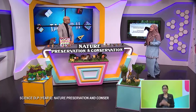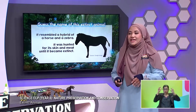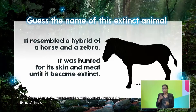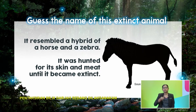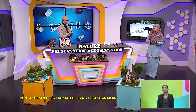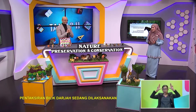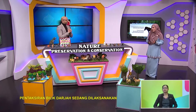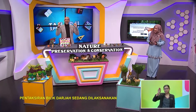Next one. What about this? It resembles a hybrid of a horse and a zebra. It was hunted for its skin and meat until it became extinct. The front part looks like a zebra, the back looks like a horse. I think it is a quagga. Quagga? Yes, it's correct, Abang Sean — it's the quagga.